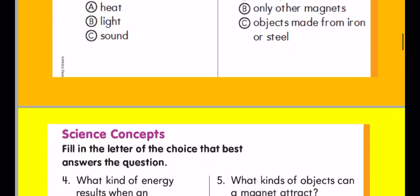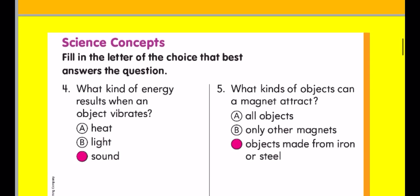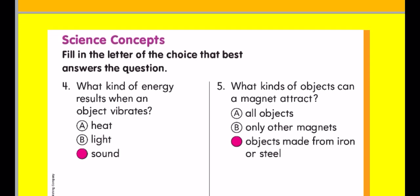Let's see the answers. A kind of energy that needs to vibrate, definitely it's a sound. Just like the drum or a piano or a violin. What about kind of objects that a magnet can attract? Its objects are made from iron and steel. Excellent, boys and girls. If you got them right, put a big star for yourself. Let's complete.